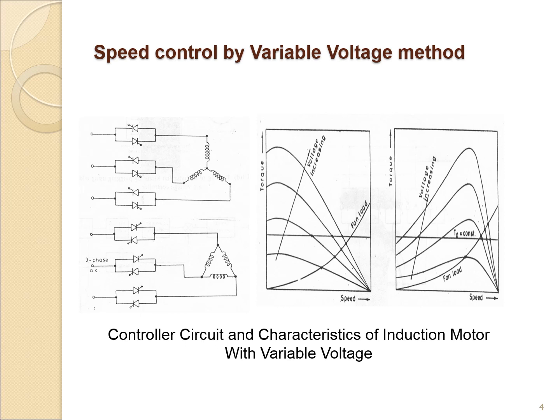Speed control by variable voltage method uses an AC voltage controller. This is a three-phase AC motor; the three-phase AC voltage controller output is given to the AC motor. By varying the firing angle of the AC voltage controller — which has two SCRs connected in anti-parallel direction — the output voltage can be varied.